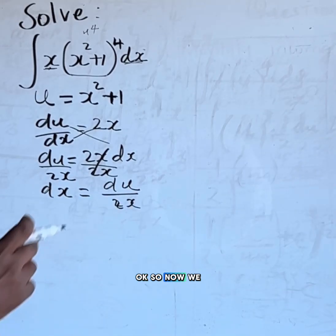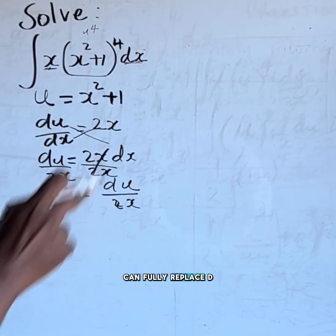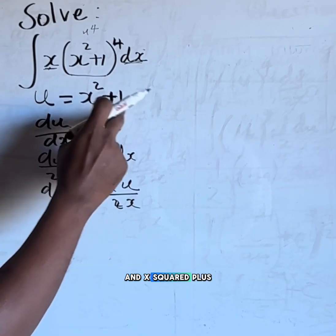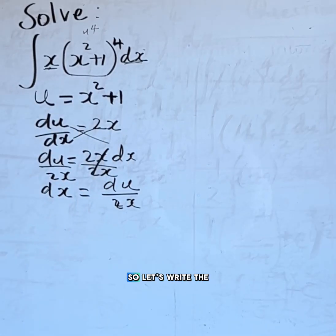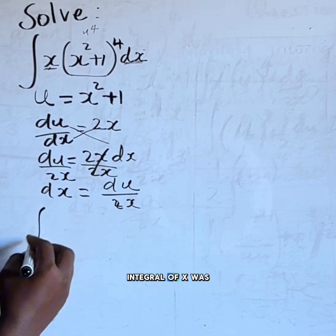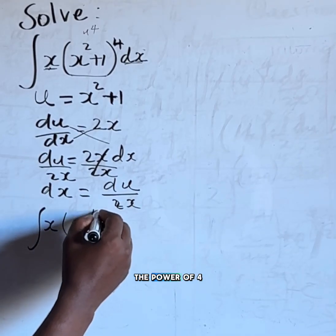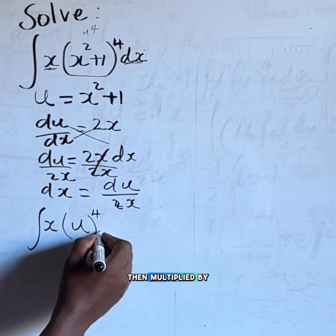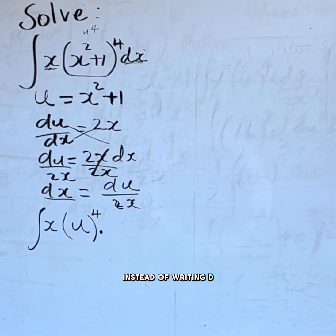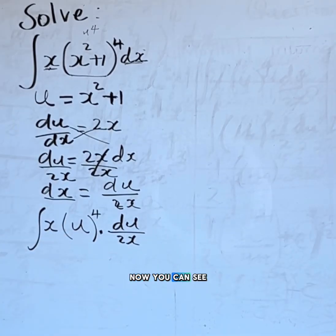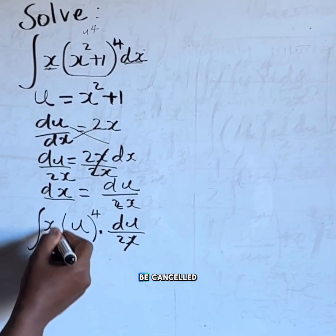So now we can fully replace dx with du over 2x and x squared plus 1 with u. Let's write the original function. We have the integral of x, x squared plus 1 is u raised to the power of 4, then multiplied by instead of writing dx we write du divided by 2x. Now you can see that these two can be cancelled.